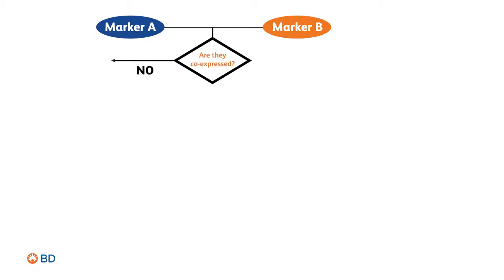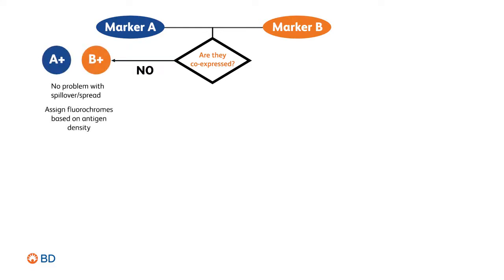If they're not co-expressed, spread will have no impact on resolution, so fluorochromes and markers can be matched based on brightness and antigen density only. Since spread is not an issue in this scenario, you can strategically use two fluorochromes with significant spillover. This tactic will prevent you from using fluorochromes that do not work well together on co-expressed markers, which will result in loss of resolution.